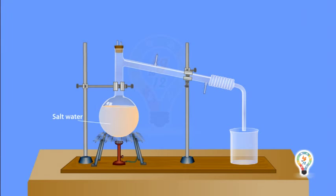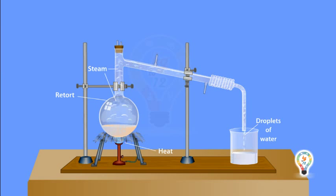Take some salt water in a retort and heat the retort till the steam comes out of it. We will see the steam getting collected inside the beaker in the form of droplets of water. The steam condenses and reaches the beaker and the salt is left behind in the retort.